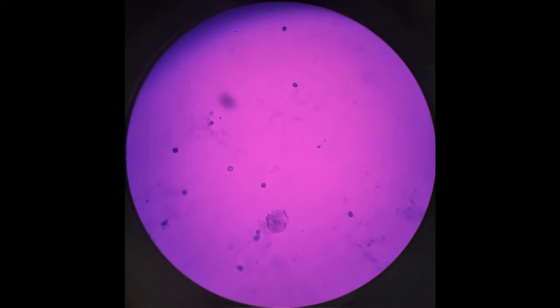This is how WBCs will appear on the counting grid under 40x. The nuclei are stained deep blue against a violet background.